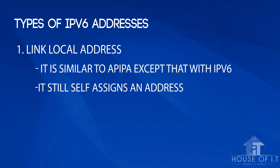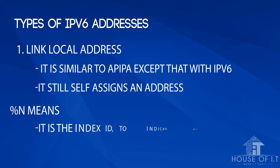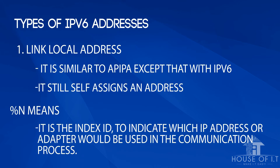You have much better chances of winning the lottery than getting a duplicate address. IPv6 also has built-in conflict detection, which makes it impossible to get a duplicate address. If you run ipconfig and wonder what the % symbol means, it is the index ID to indicate which IP address or adapter would be used in the communication process.